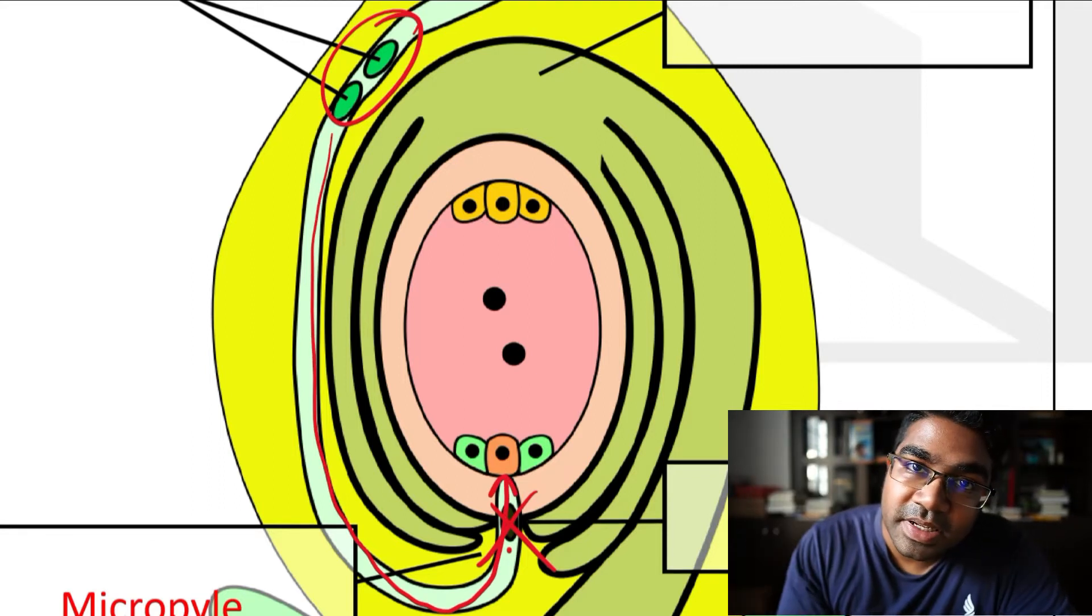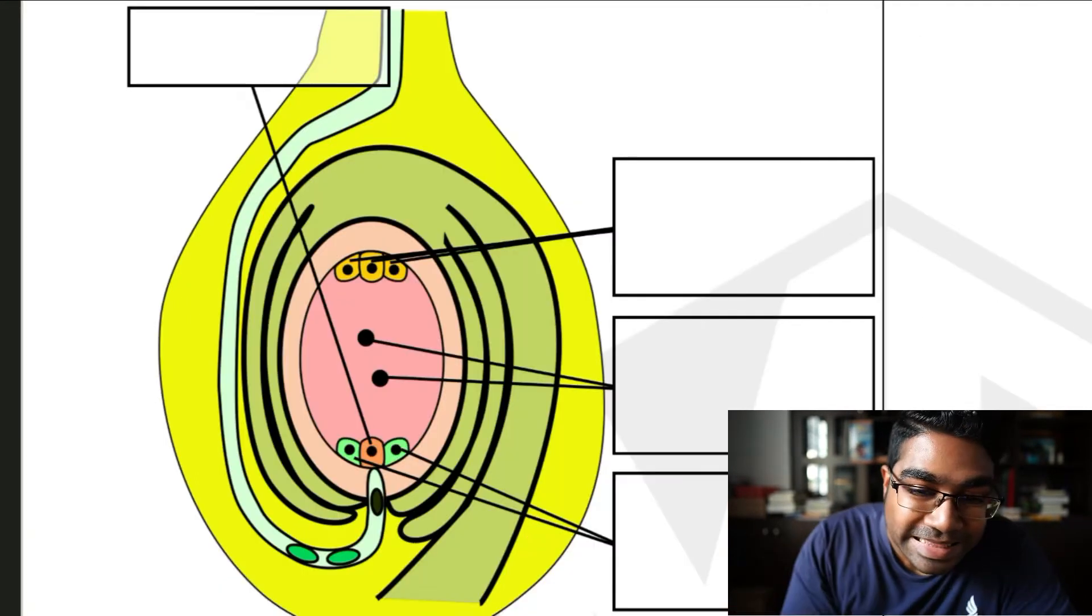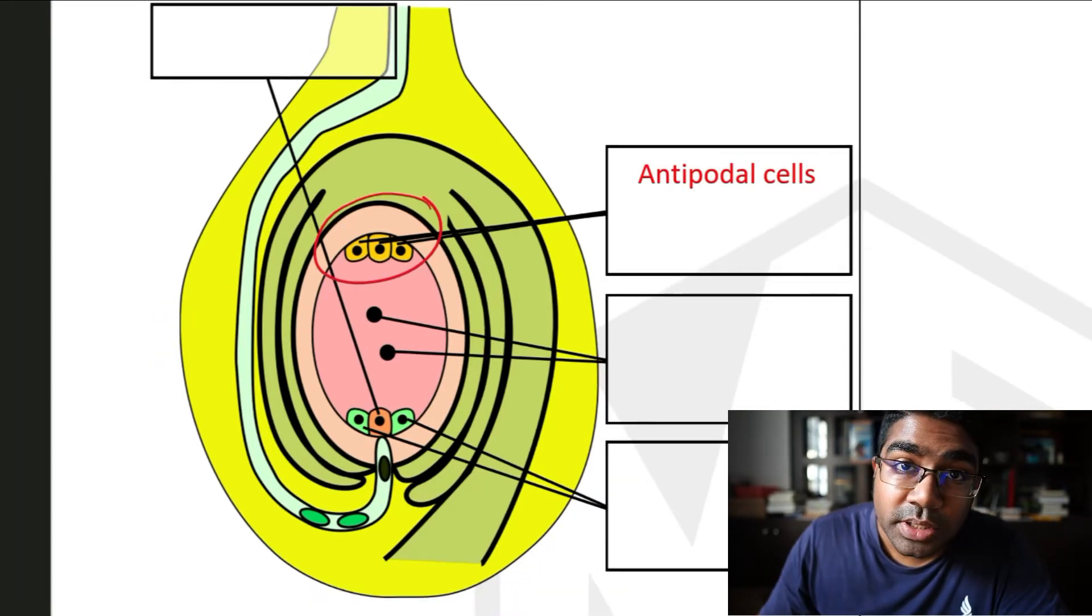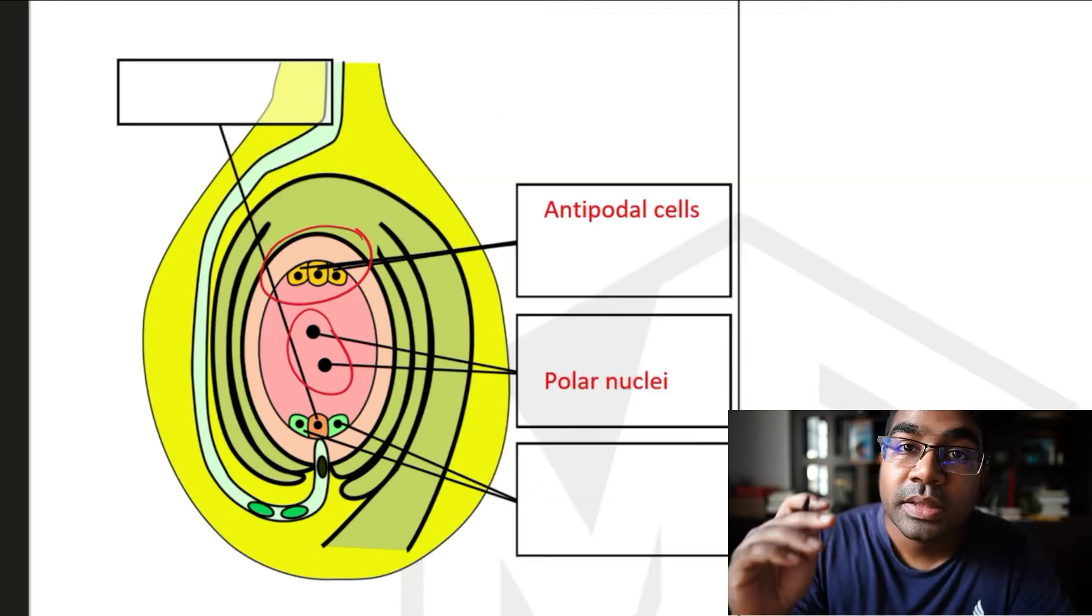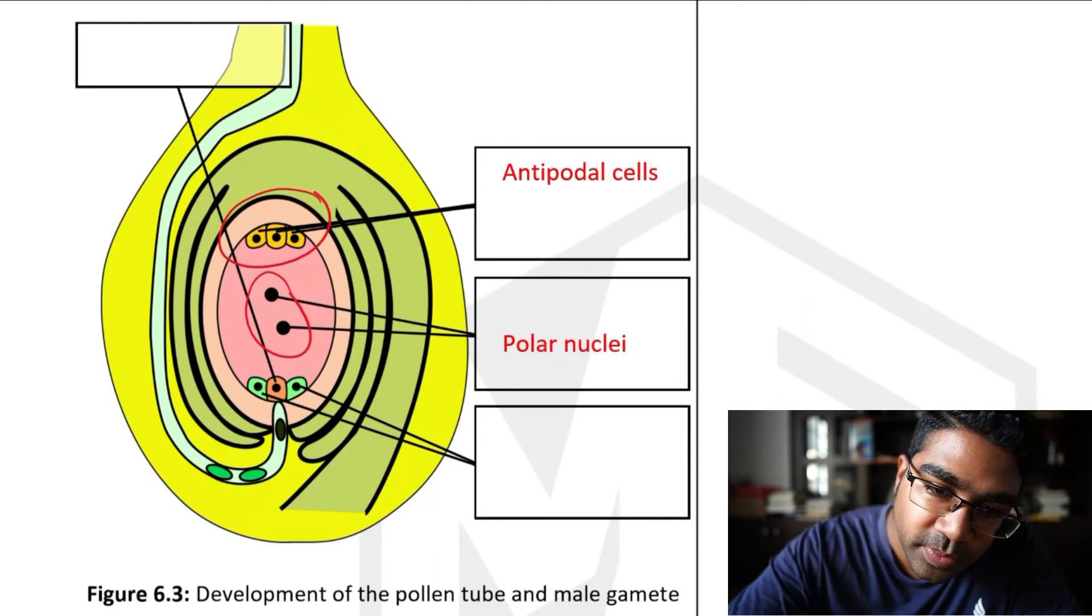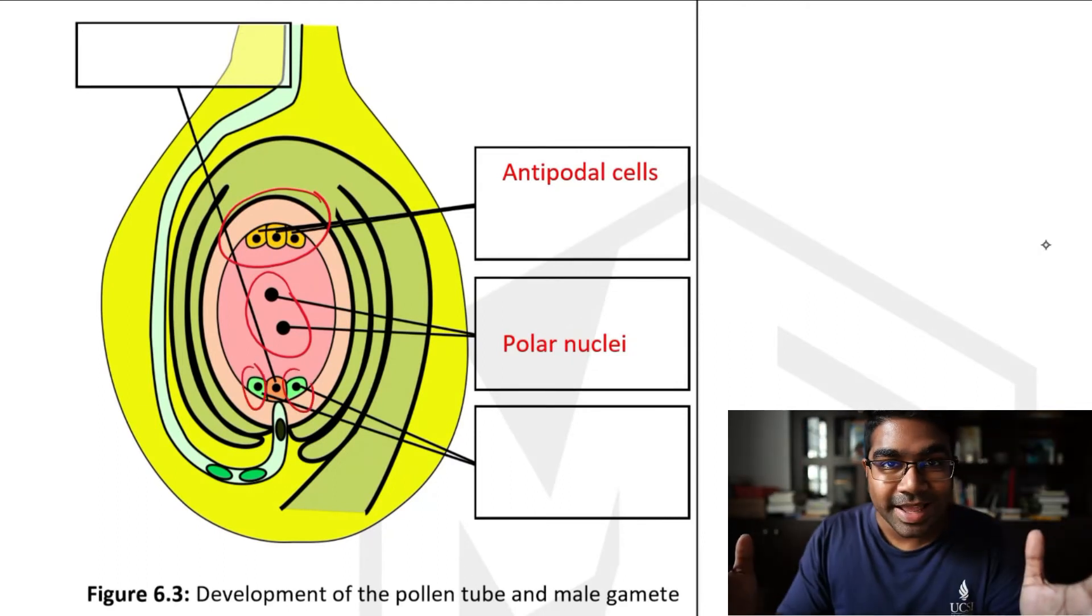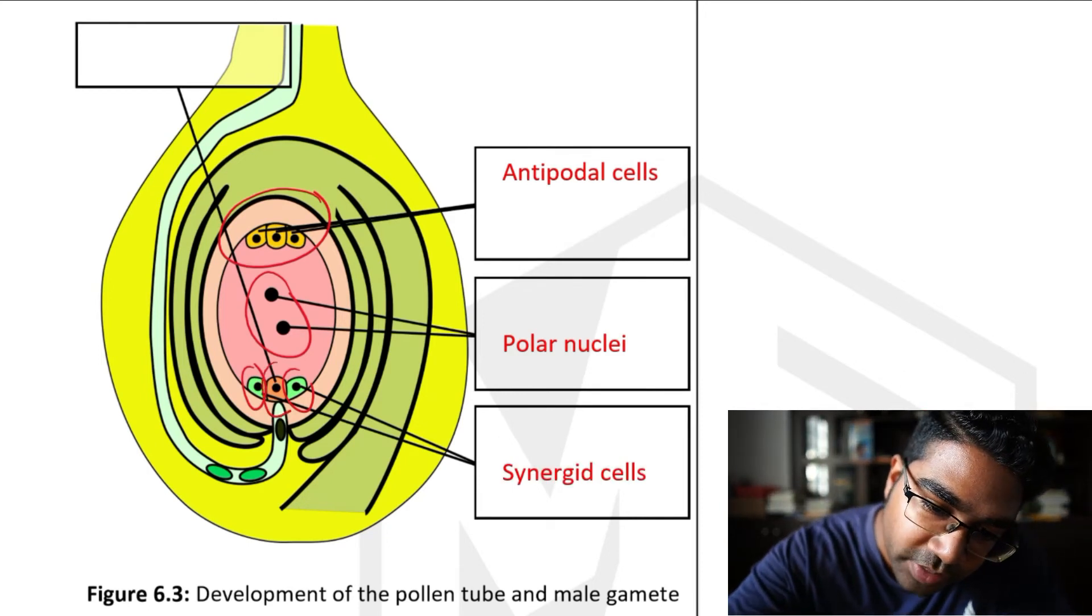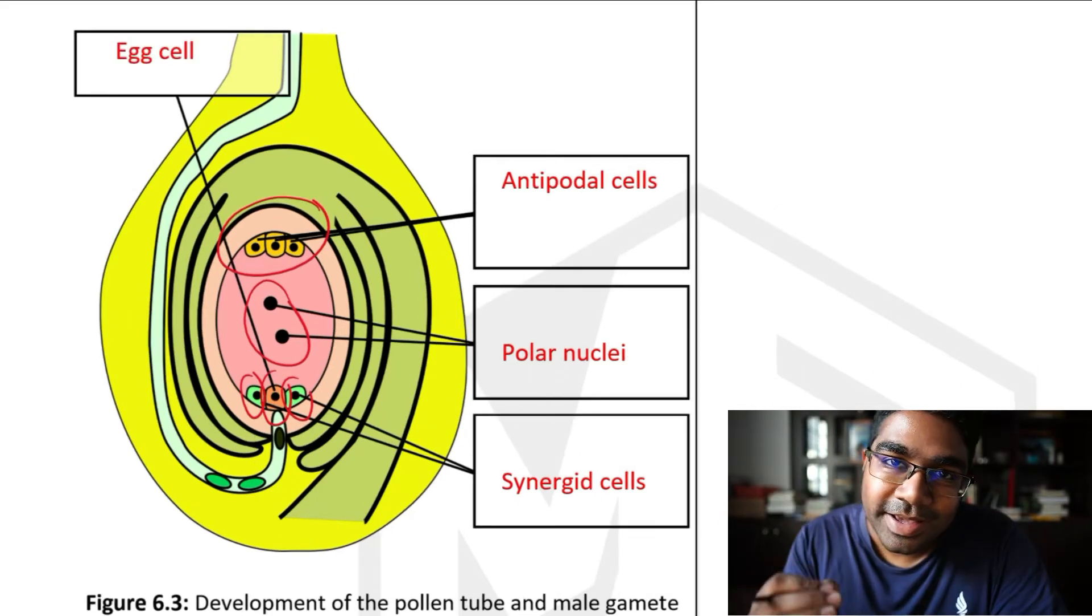And now the male gametes are going to come in and they're going to enter into the embryo sac. Now this is where double fertilization is going to occur. Let's do a bit of revision of what is in the embryo sac. The three cells up here are called the antipodal cells. The two in the middle are called the polar nuclei. At the bottom, you see three cells as well. However, the ones in green, the two cells at the side are known as synergid cells. And finally, the orange one, the one in the middle, this is the egg cell.